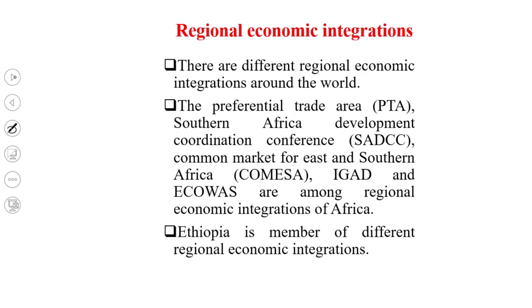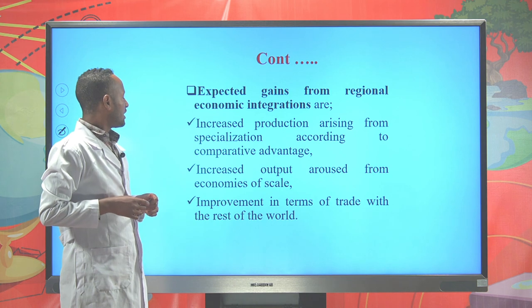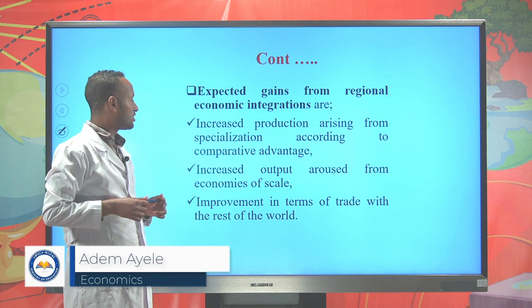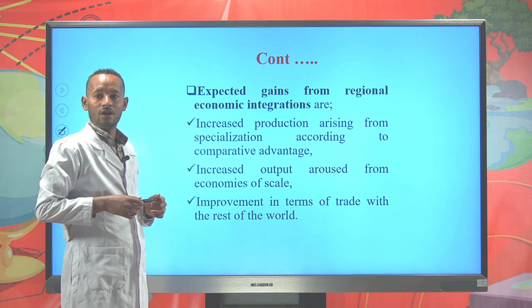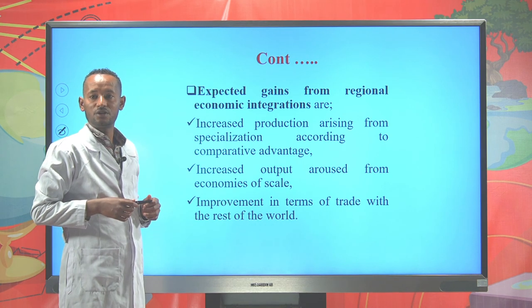There are different regional economic integrations around the world. In Africa, these include the Preferential Trade Area (PTA), Southern African Development Coordination Conference (SADCC), Common Market for East and Southern Africa (COMESA), IGAD, and ECOWAS. Ethiopia is a member of different regional economic integrations such as COMESA and IGAD. The expected gains from regional economic integrations are: increased production arising from specialization according to comparative advantage, increased outputs from economies of scale, and improvement in terms of trade with the rest of the world.